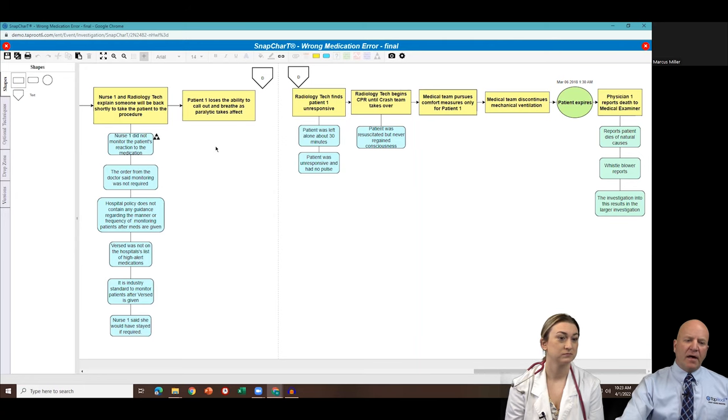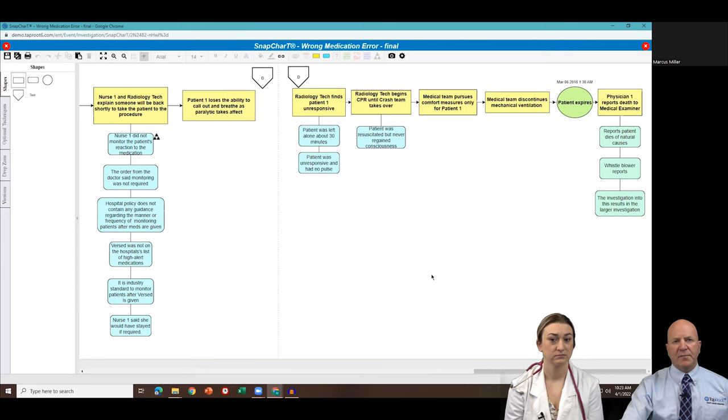So then once the nurse and radiology tech leaves, this is the tragic part, that paralytic takes effect and it takes away her ability to call out or breathe. She's by herself. She was left alone for about 30 minutes. They find her unresponsive. Somebody does find her and they do start resuscitation. They're able to get her back, but she never regains consciousness. And eventually they discontinue the ventilation and the patient expires.